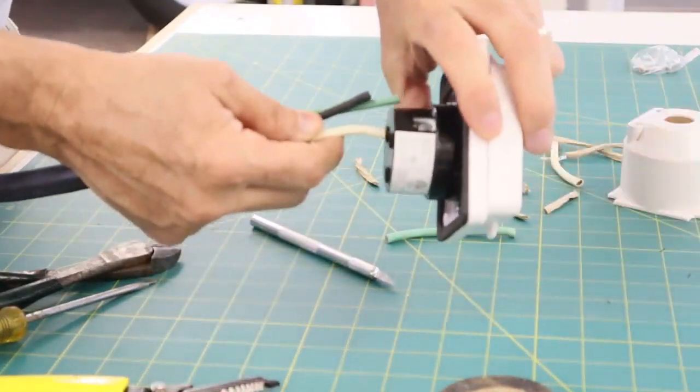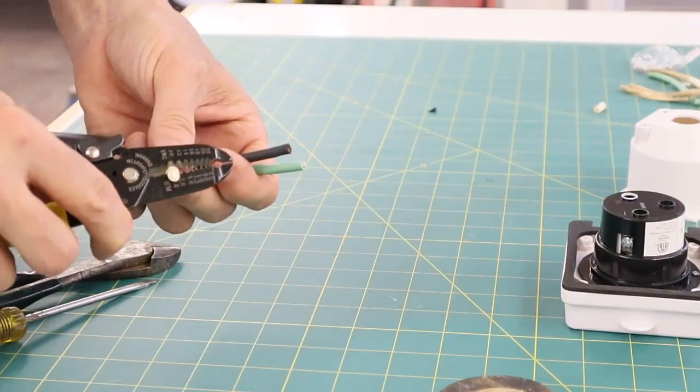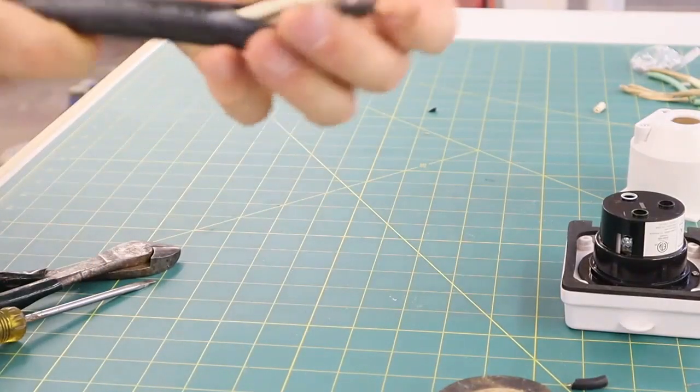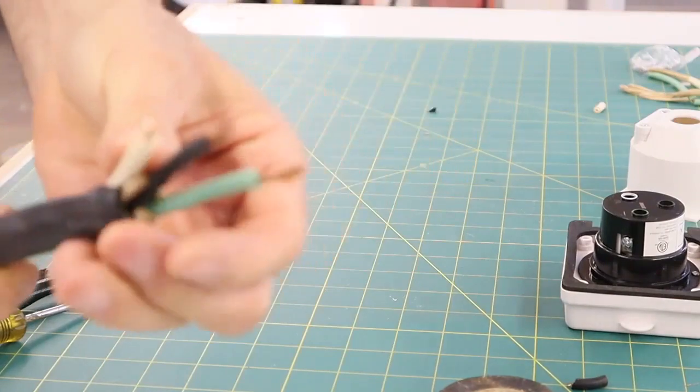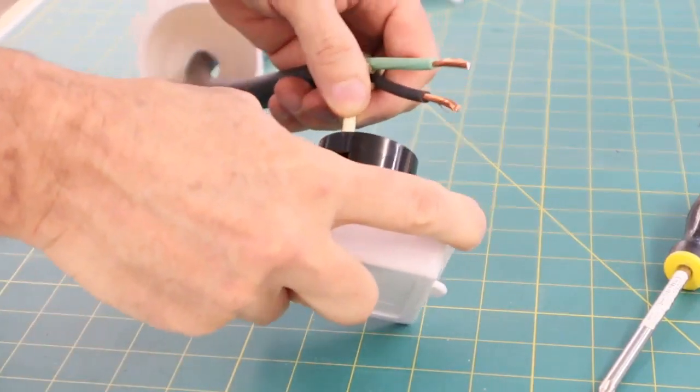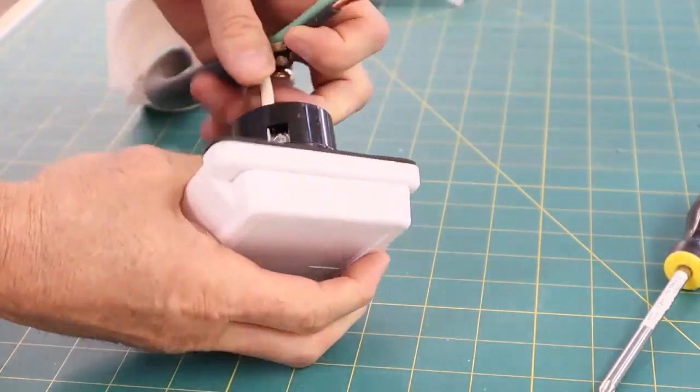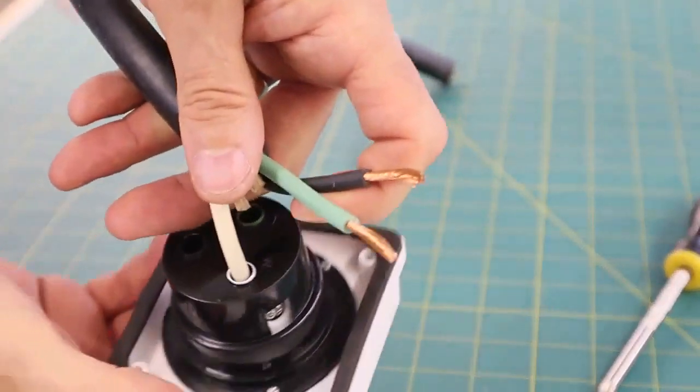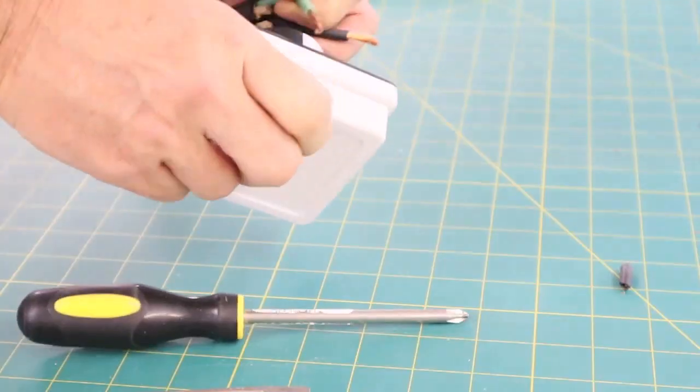Before I could stick each wire into the plug-in, I had to strip off about 5-eighths of an inch of insulation from each wire. Once I got all the insulation stripped, I stuck each wire in its color-coordinated spot and used the side screws on the plug-in to clamp down on the wires.